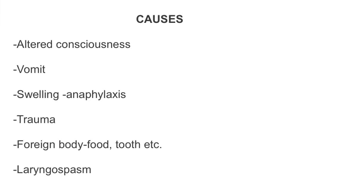Common causes of complete or partial airway obstruction include altered consciousness where the patient cannot maintain their own airway, causing upper airway collapse. It could be due to vomit, swelling from anaphylaxis, direct trauma to the face, or a foreign body such as food or a tooth. It could also be due to laryngospasm, where the vocal cords close causing a partial or complete obstruction — whilst rare, you may encounter this in the recovery unit post anaesthesia.